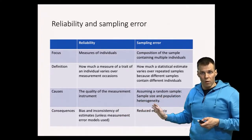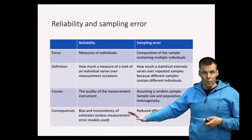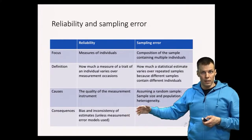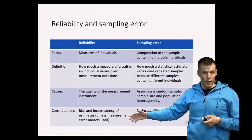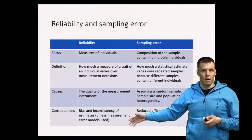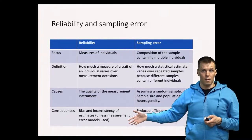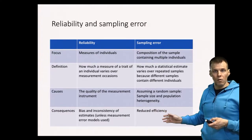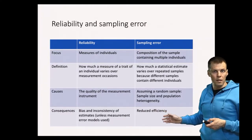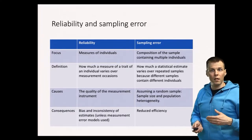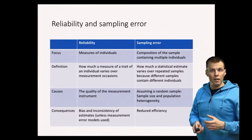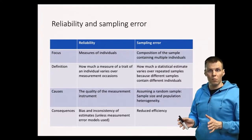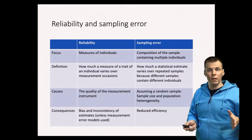The consequences of these two sources of error are also different. If you have unreliable measures, then statistical associations using those unreliable measures will be inconsistent and biased, unless you explicitly take reliability into account in your statistical models, which can be complicated to do. Sampling error, on the other hand, simply influences the efficiency of your estimates. If you have high sampling error, your results could still be unbiased — they are just less precise.